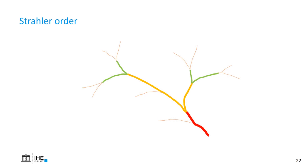The second method to derive streams is to use the Strahler order. This method orders the reaches, and we can set the threshold for which we consider it as a stream. It starts with the smallest ones, ordered with number 1. When two of the same order join, it increases the order. So two of order 1 join into order 2, and when two of order 2 join, it becomes order 3.